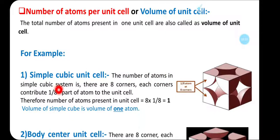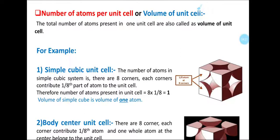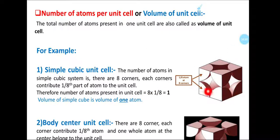The number of atoms in a simple cube: we know there are 8 corners of the cube, and each corner contributes 1/8 part of the atom to the unit cell. The remaining 7 parts contribute to adjacent unit cells. Therefore, the number of atoms present in the simple cube unit cell is 8 corners × 1/8 = 1. So the number of atoms present in the simple cube is 1.